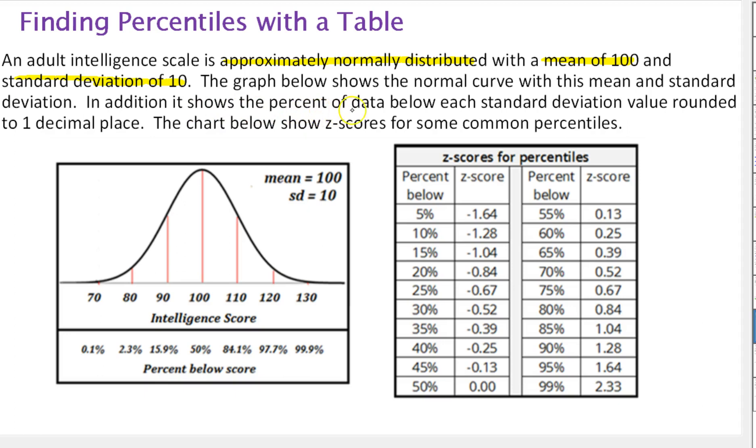In addition, it shows the percent of data below each standard deviation value rounded to one decimal place. The chart below shows z-scores for some common percentiles. So let's take a look first at this chart. We have our normal graph. There's a mean of 100, the standard deviation is 10, so each standard deviation goes up or down another 10.